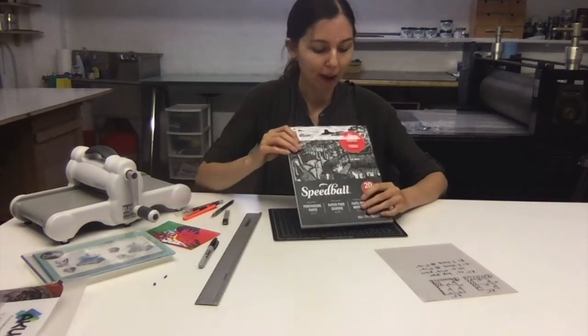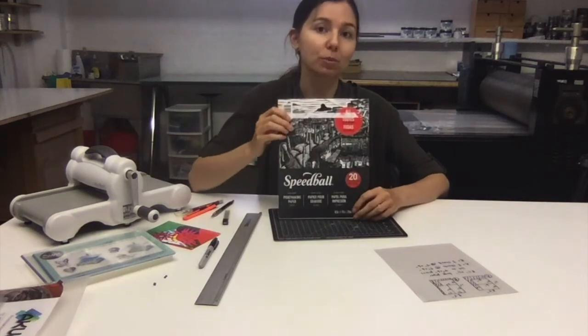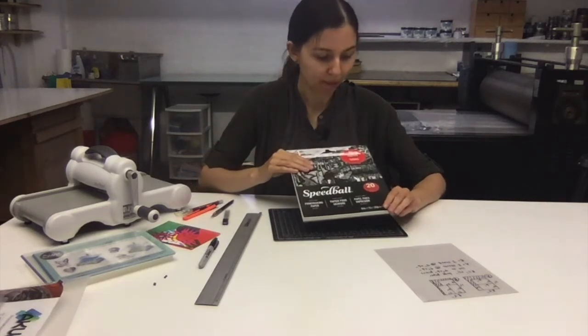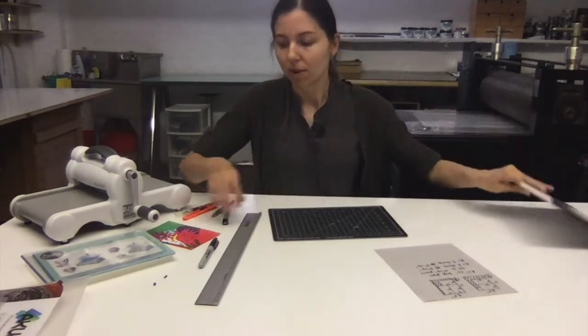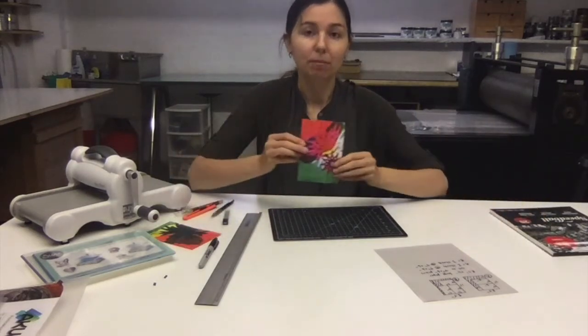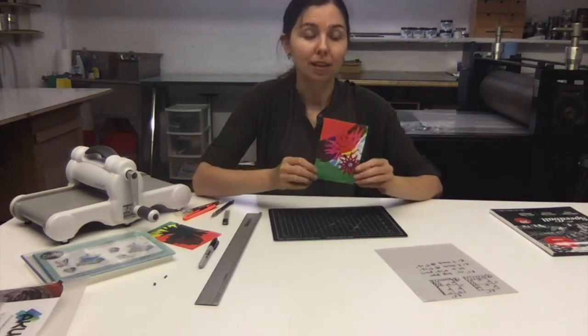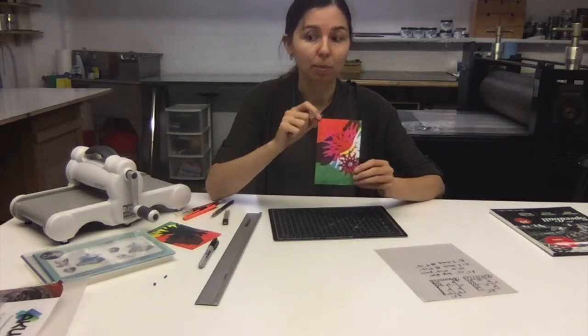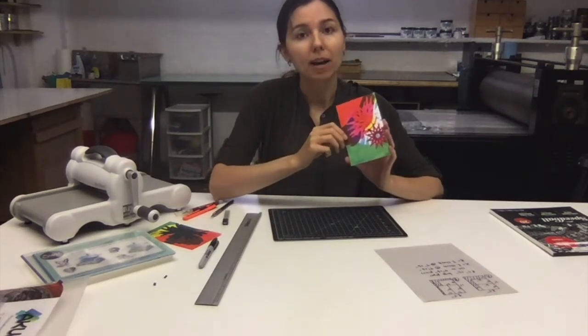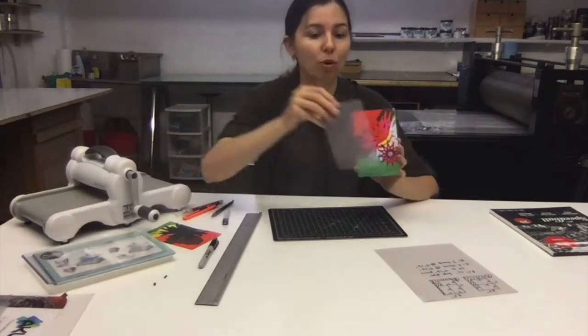This is a Speedball pack of 20 sheets, 90 pound or 245 grams per square meter weight paper, and the dimension is 8.5 by 11 inches. For the monotype plates that I'm wanting to print, I want to print bleed prints, and that means that the image area extends all the way to the edge of the paper. So I'm going to cut my paper the same size as the printing plate, so 4 by 6 inches.